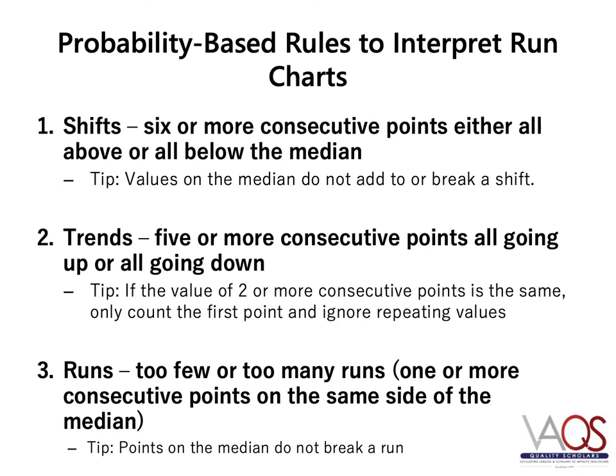Runs are one or more consecutive points on the same side of the median. For this rule, you will be examining your run chart to see if there are too few or too many runs compared to the probability-based expected number of runs based on the number of usable data points. It is important to note that you only need one of these rules to be positive to have special cause variation. Both the shift and run rules require your chart to have a median.